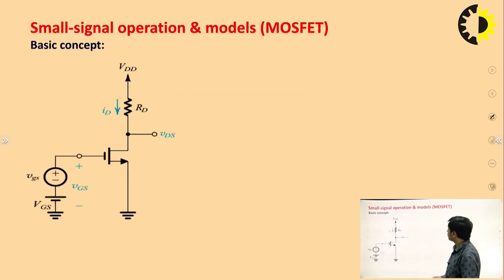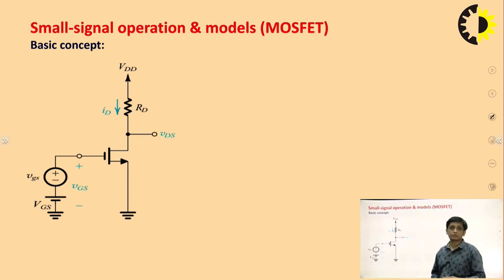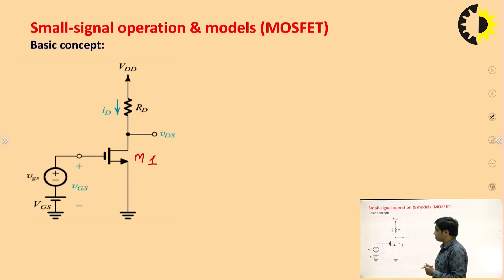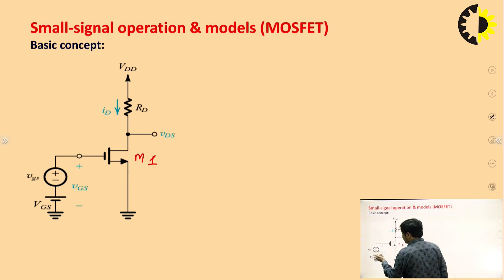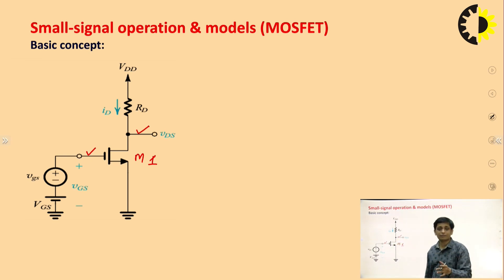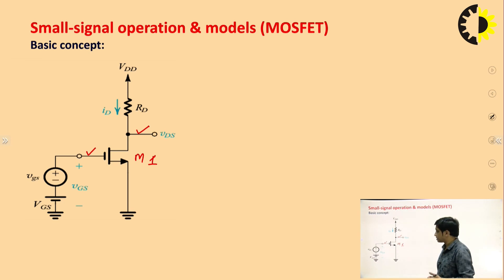Starting with the small signal operation and models for MOSFET. Here we need to design an amplifier, which means we will apply the input signal at the gate terminal and take the output signal from the drain terminal in the common source configuration. Normally when we design an amplifier for audio applications, we prefer the common source amplifier.